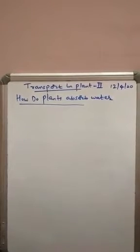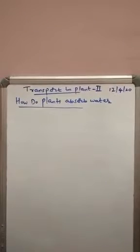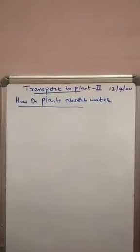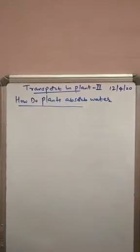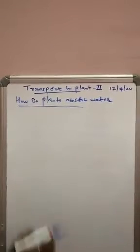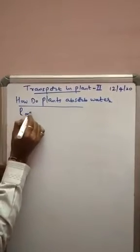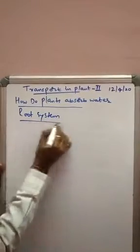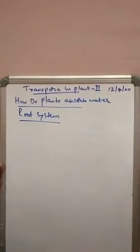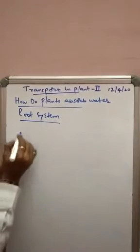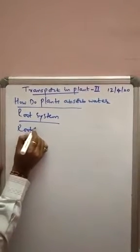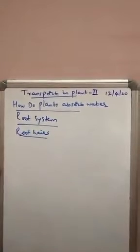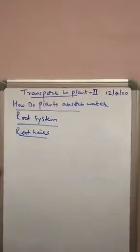The main source of water is mainly soil water. The absorbable form of water is mainly capillary water, which is absorbed by the root system. In the root system, mainly the region of maturation or region of root hair, which has unicellular outgrowths called root hairs, are the main water-absorbing structures.